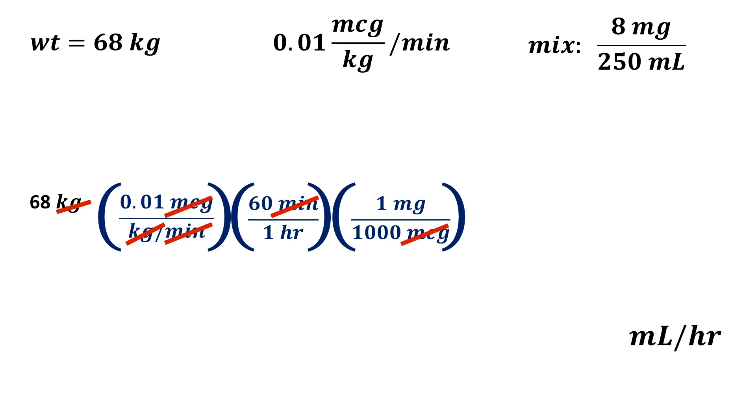We then insert our infusion concentration because that constitutes one infusion. Our mix is 8 milligrams in 250 mLs. However, we flip this conversion factor onto its reciprocal to get milligrams in the denominator and we can then cancel the milligrams out.